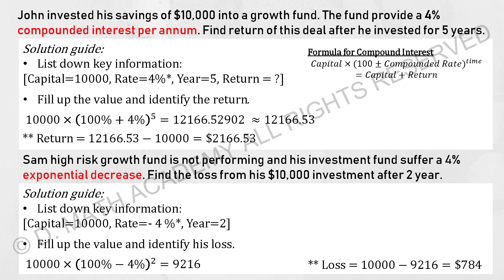To find the return, simply take this result minus 10,000. You should earn around 2,166.53 as the interest.